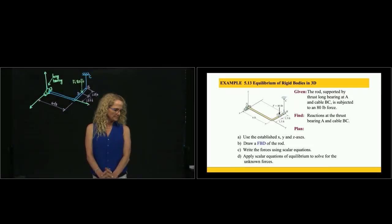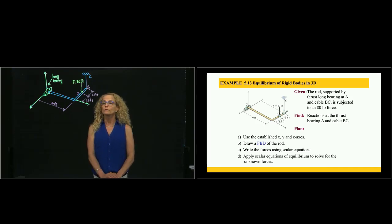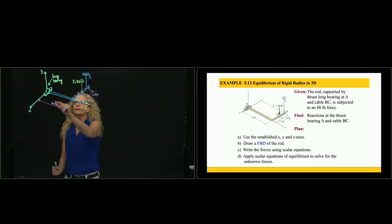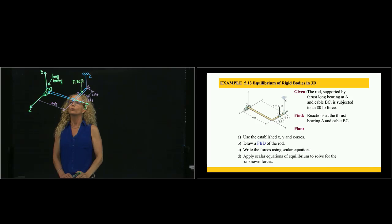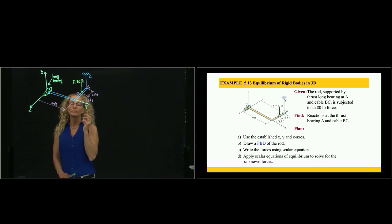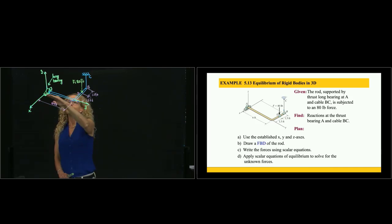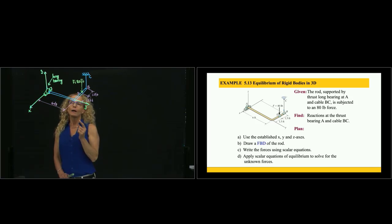We are solving problem 5.13 on equilibrium of rigid bodies in 3D. We have axes x, y, and z, and a beam that is bent at a corner and supported to the ground with a long bearing. A long bearing means it doesn't allow movement perpendicular to the bearing - it doesn't allow movement in X or Z, and it doesn't allow rotation in those directions either. It does allow rotation along its own axis.